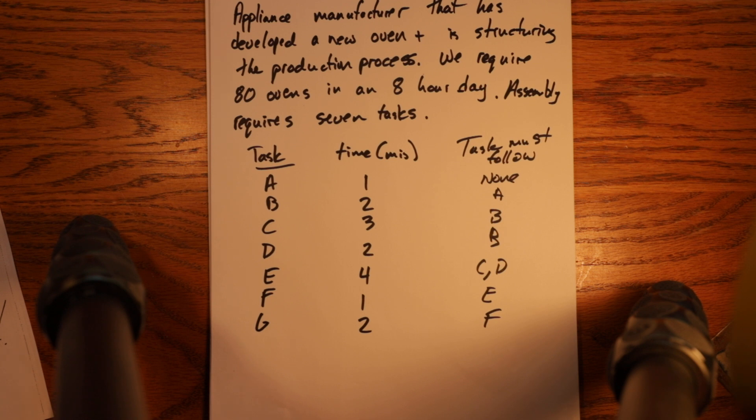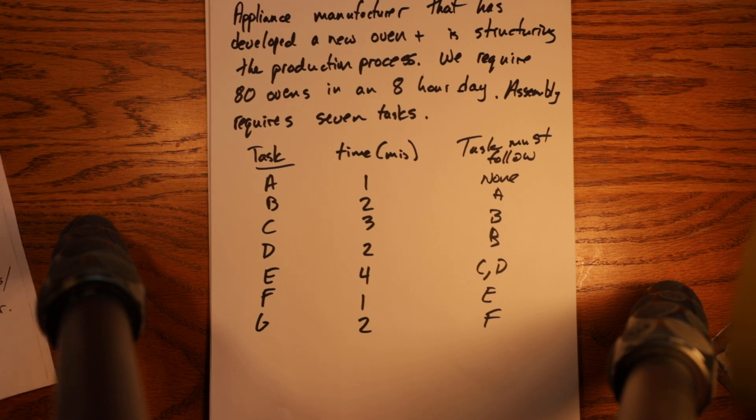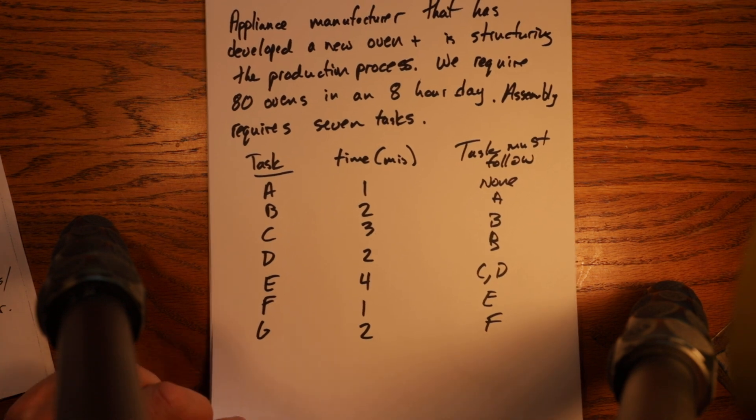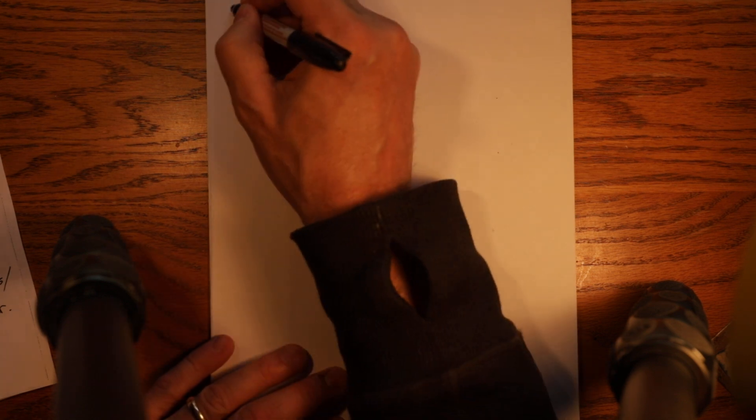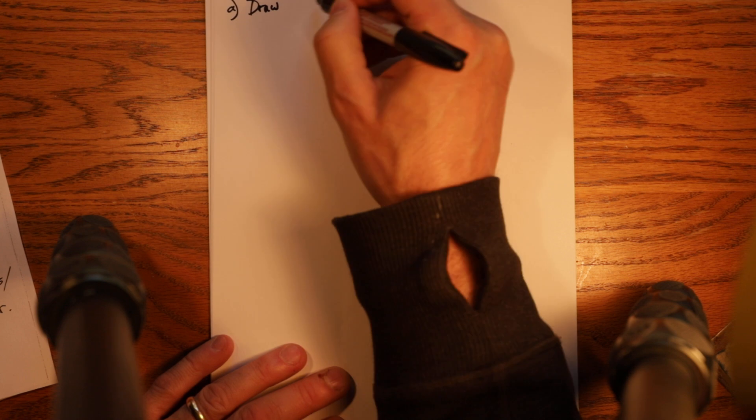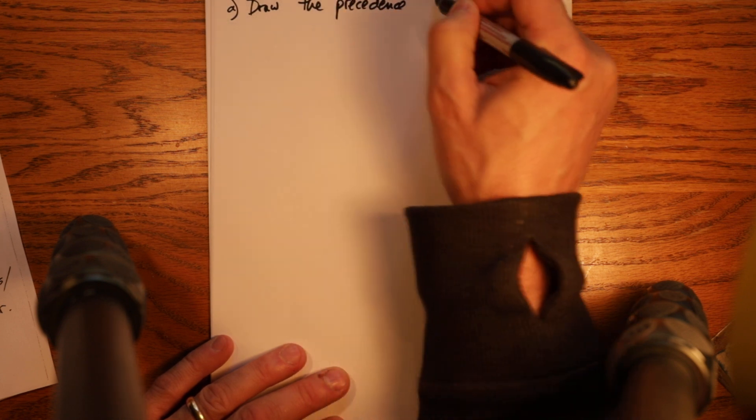So what kinds of things do you have to do in order to structure that process? Putting people into the right combinations of tasks so that we can get that done in the time we want. So here are the steps we're going to go through. These are questions that I could ask. This question has several steps. I could ask any or all of these types of questions if I gave you the information. The first question is draw the precedence diagram.